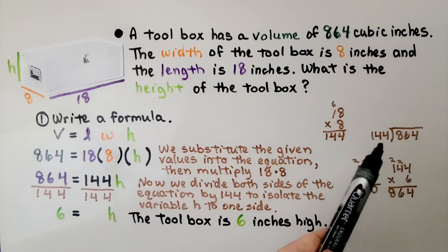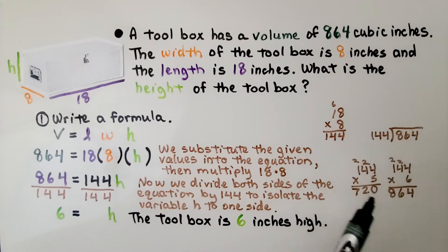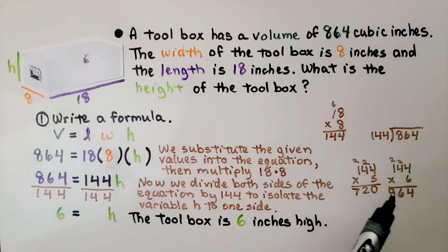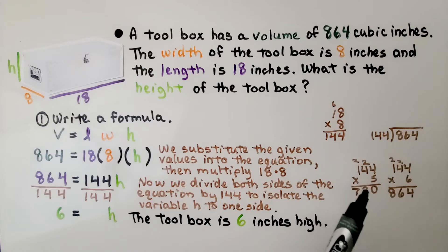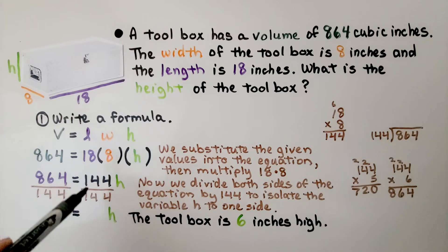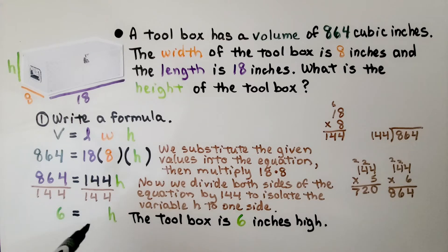We could do the long division, or we could try 144 times some numbers to see where 864 comes in. We try 5 — that's not enough. We try 6, and that's perfect. Same numerator and denominator makes 1, so we have 1h. The toolbox is 6 inches high.